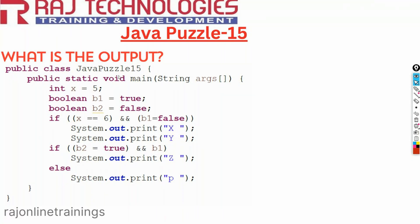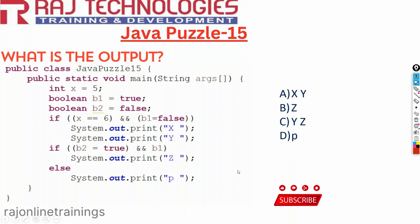Here we have Java puzzle 15 with a main method. We have taken a variable x whose value is 5, and two boolean variables b1 equal to true and b2 equal to false. We are comparing conditions: if x equals 6 and b1 equals false, we print 'x and y'. Then another if condition: if b2 equals true and b1, it prints z, else it prints p. The options are: A - x and y, B - z, C - y z, D - p.